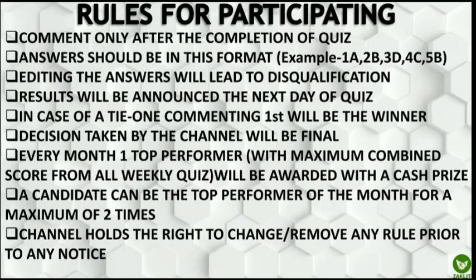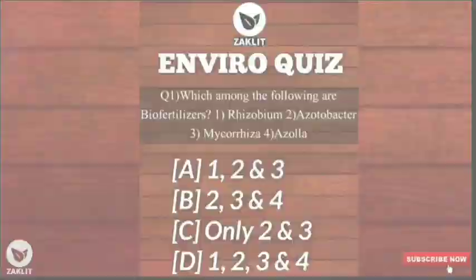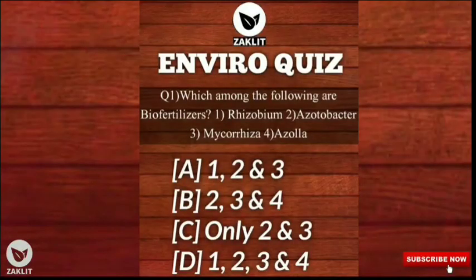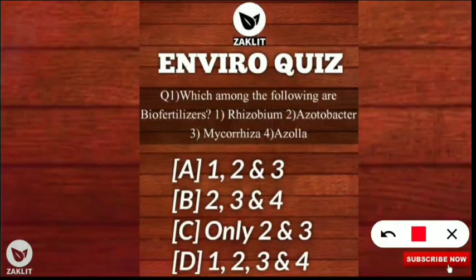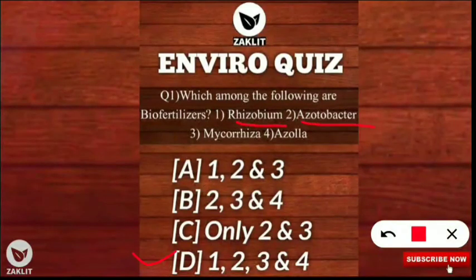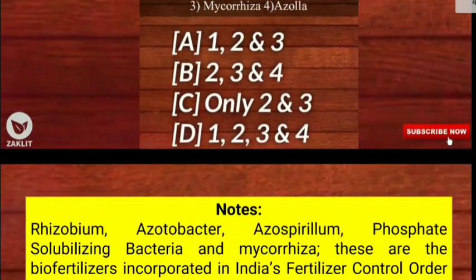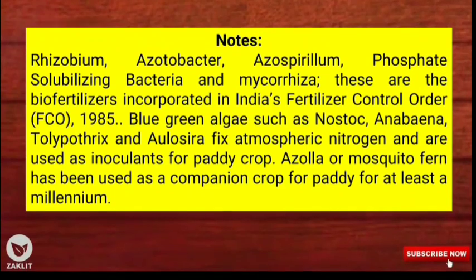The first question was: which among the following are bio-fertilizers? The options were Rhizobium, Azotobacter, Mycorrhiza, and Azolla. The correct option is option D — all four. Rhizobium, Azotobacter, Mycorrhiza, and Azolla are all examples of bio-fertilizers. Let's know a bit more about these bio-fertilizers.